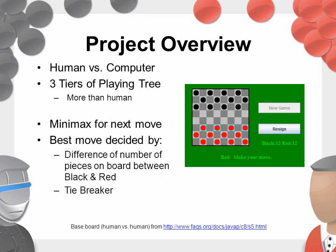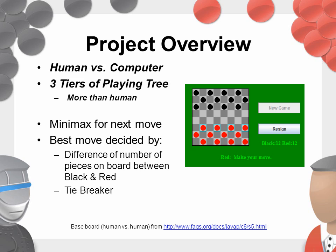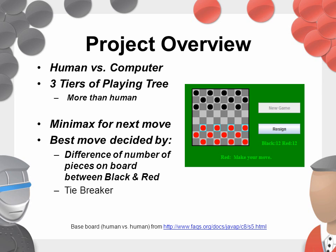For our project, we created a checkers game where a human player can play against a computer. The computer is able to see three moves ahead for all possible moves on the board, which is obviously more than a human can. To determine which path the computer will choose, Minimax will be applied. The heuristic value for the path will be the difference of the black pieces and the red pieces left on the board for the node at the third ply, or third level, of the tree. We also implemented a tie-breaking technique based on board location values.